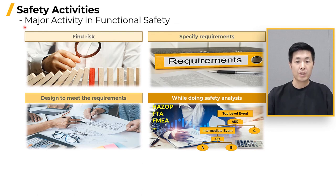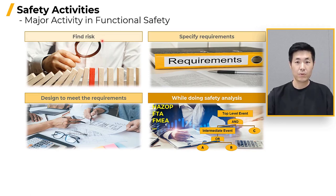The activities within the functional safety lifecycle are categorized into four main categories. Firstly, we assess the potential hazards associated with the product we are developing and the resulting risk. What is the function of our product? What effect does this function have if it malfunctions? What is the level of risk considering the frequency of occurrence? This process involves finding answers to these questions.